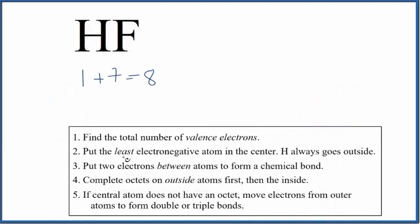With Lewis structures, we usually put the least electronegative element in the center, but here there's no center. So we'll just write H and F. Next, we place a pair of electrons between atoms. That forms the chemical bond. This is a covalent bond between the hydrogen and the fluorine atom.